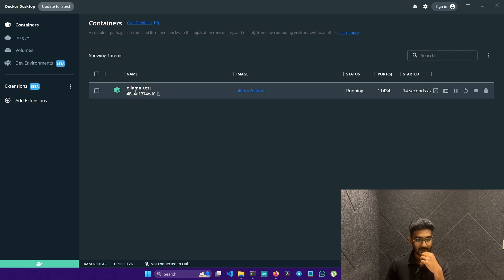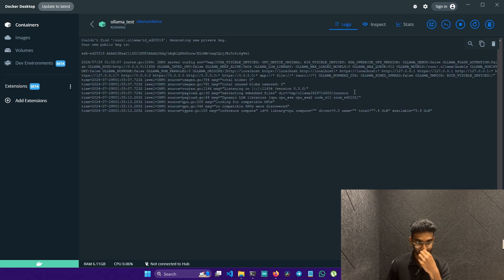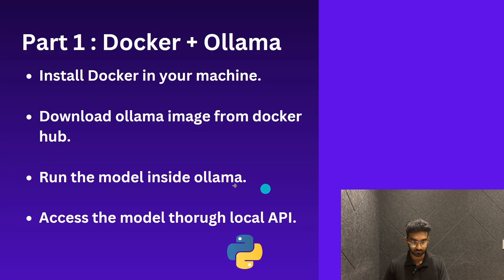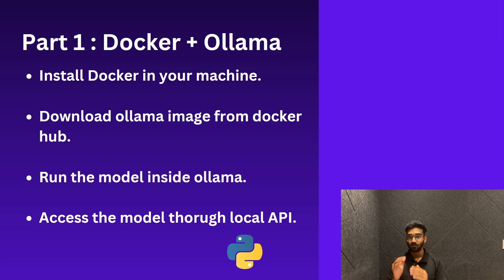On Docker Desktop, go to Containers in the top left and you can see the name of our running container: 'ollama-test' — the name we specified in the run command. Click on it and the status shows as Running. At this point, we have installed Docker, pulled the Ollama image from Docker Hub, and run that image as a container.